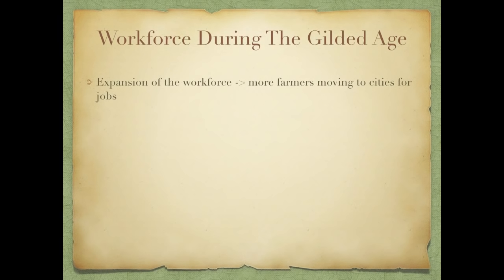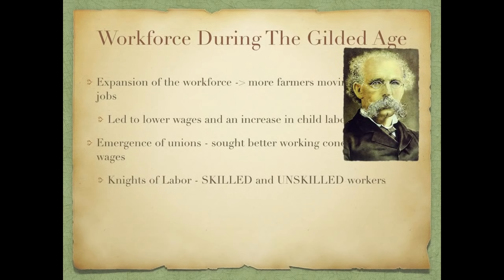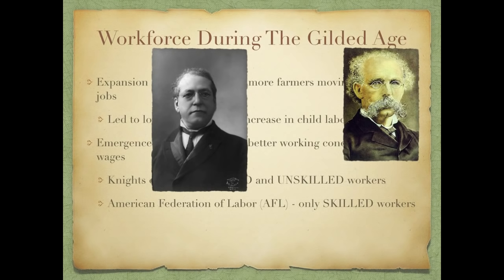Let's talk about the workforce. The expansion of the workforce leads to more farmers moving to cities for jobs — a slow shift where more farmers quit farm life and move to cities. By 1920 in Period 7, more people are living in cities than on farms. This led to lower wages and an increase in child labor, so unions emerged to seek better working conditions and wages. Two unions to know: the Knights of Labor, made up of skilled and unskilled workers, ultimately did not last long due to the Haymarket Square Riot in the late 1800s.